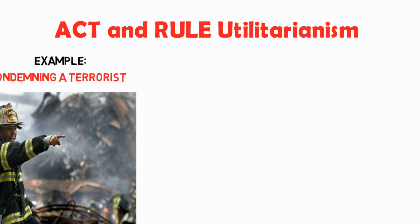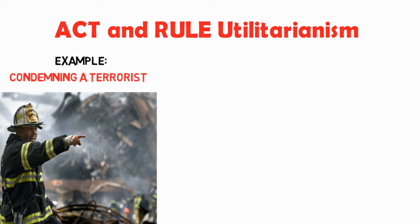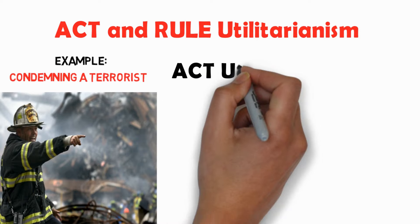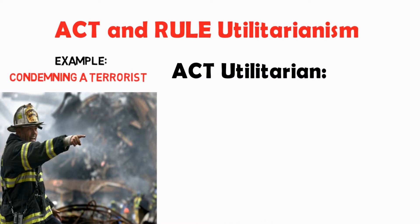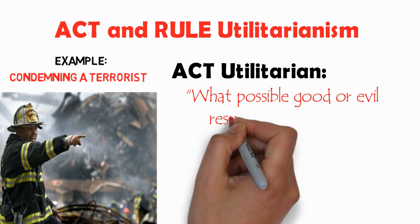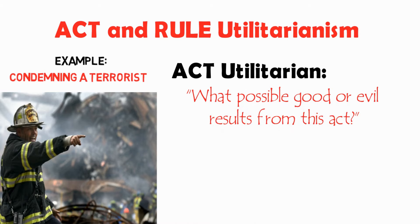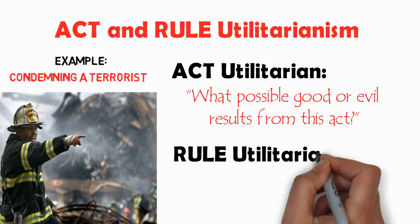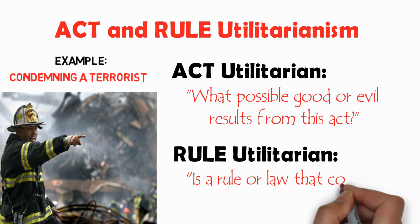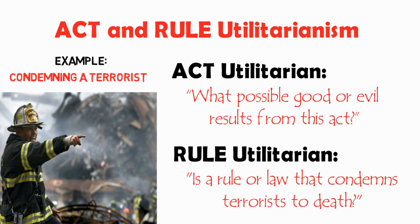Let us take again the act of condemning a terrorist to death as an example. An act utilitarian would ask: what possible good or evil results from this act? If the majority of the people are benefited by the act itself, then it is moral. A rule utilitarian, on the other hand, would ask whether there is a rule or law that condemns terrorists to death and whether this rule was formulated based on the utility principle. If this is the case, then it may be morally right to sentence a terrorist to death.